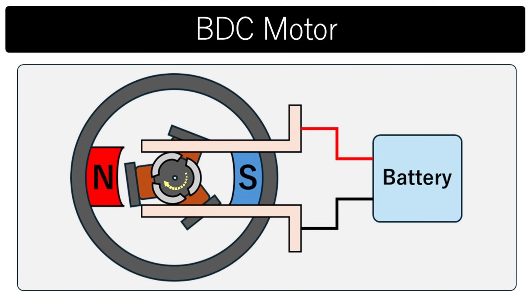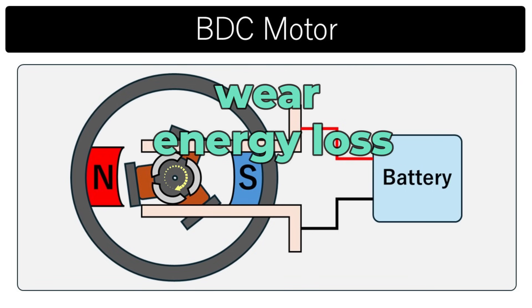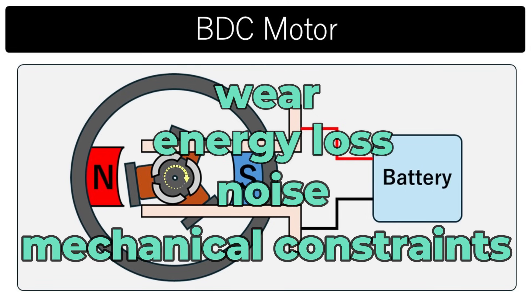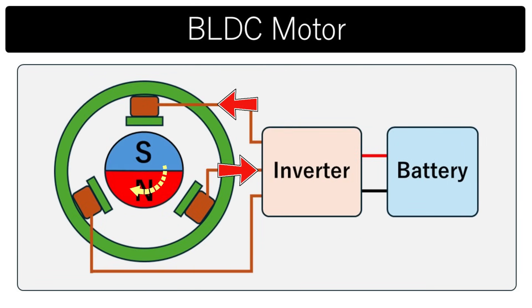That's because brushed motors use mechanical contacts to switch the polarity of the electromagnets, causing friction, energy loss, noise, and mechanical constraints on control. In contrast, BLDC motors use electronic control to switch polarity, resulting in minimal friction and no mechanical limitations.